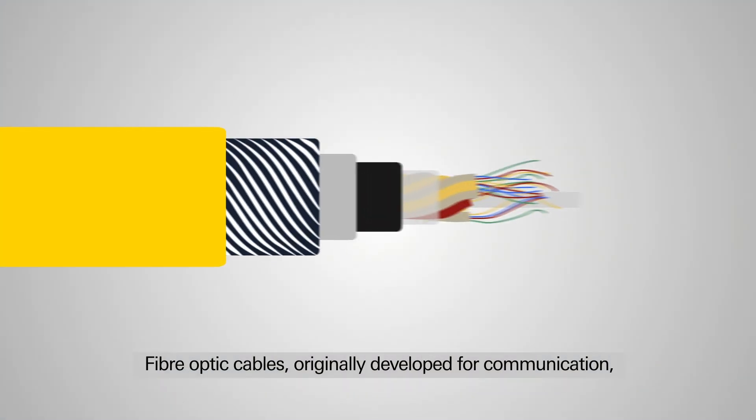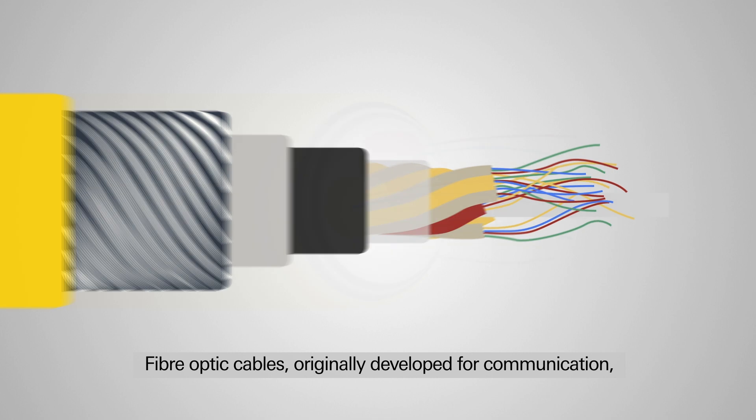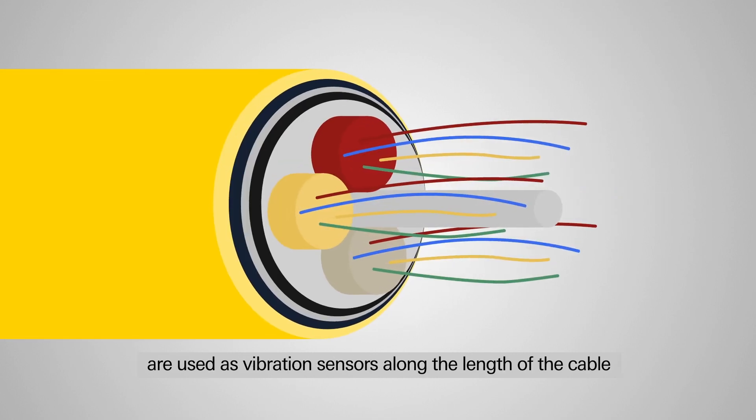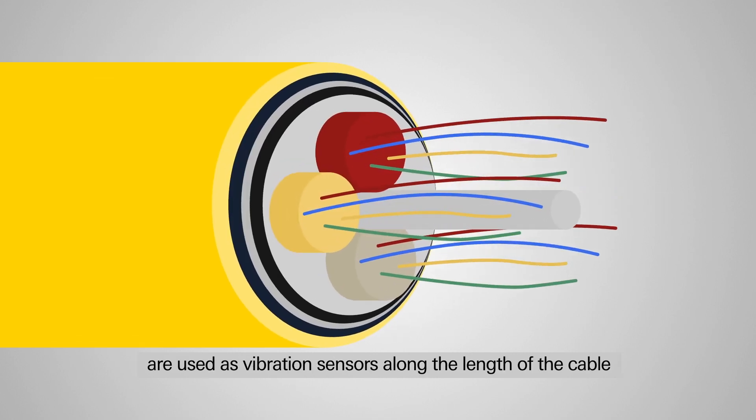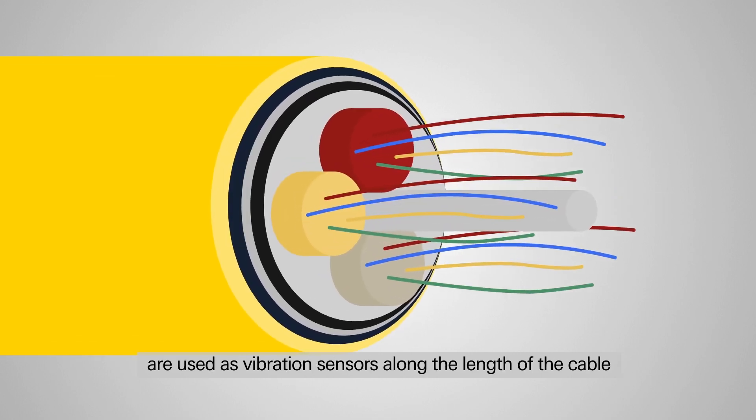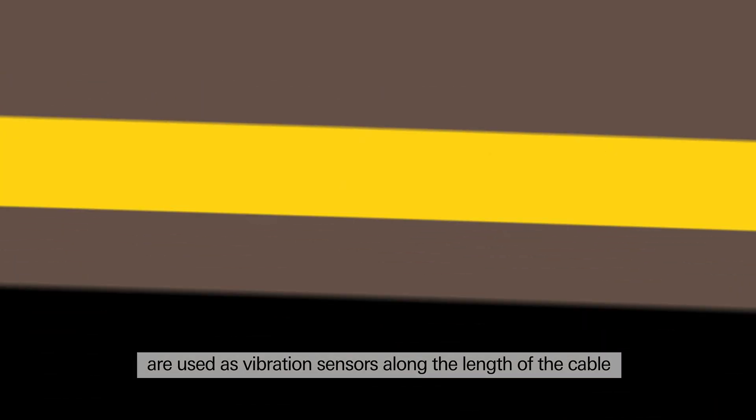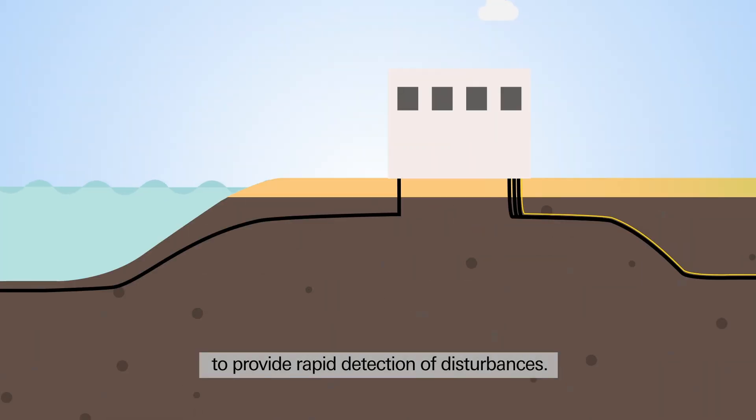Fibre-optic cables, originally developed for communication, are used as vibration sensors along the length of the cable to provide rapid detection of disturbances.